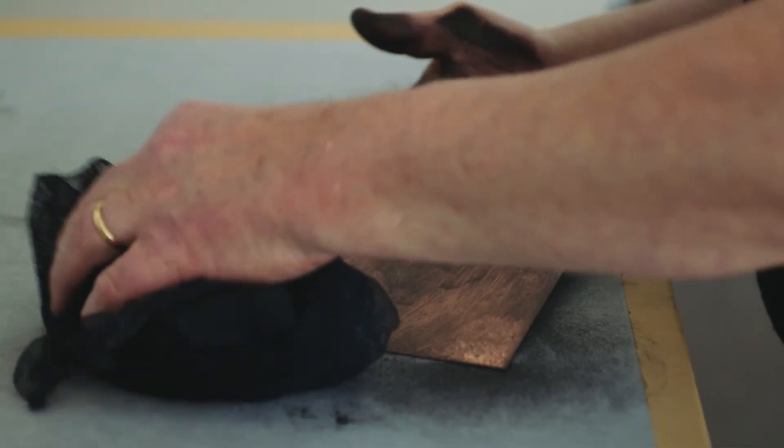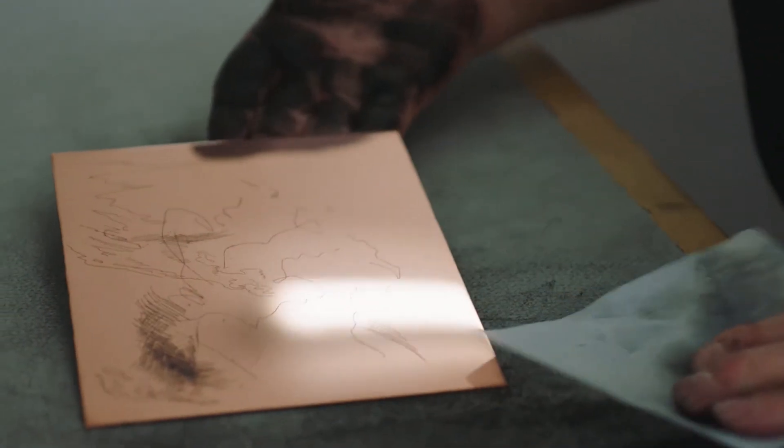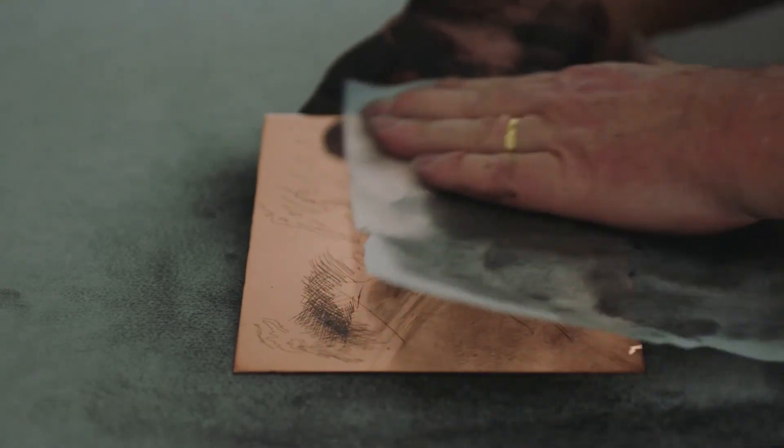The etched line's thickness comes from the time in the acid. It tends to be uniform in width and end abruptly, not in tapered points like engraved lines.